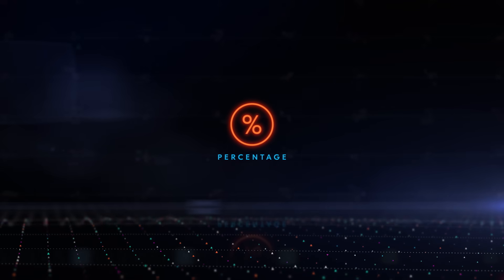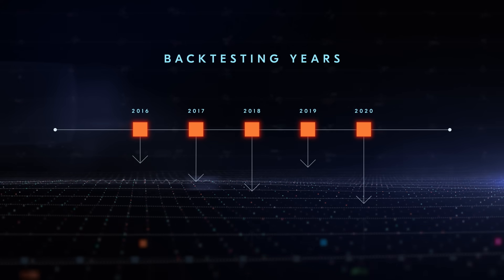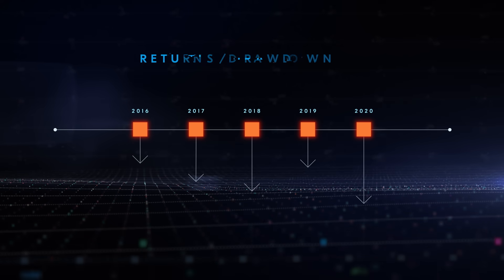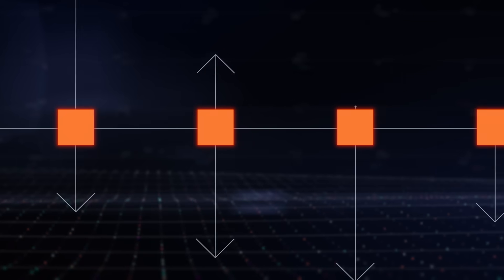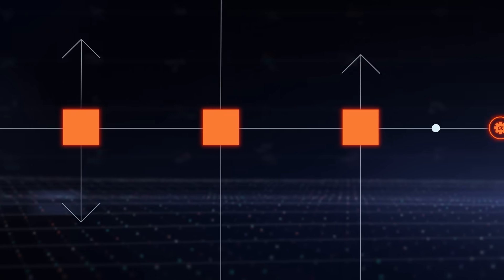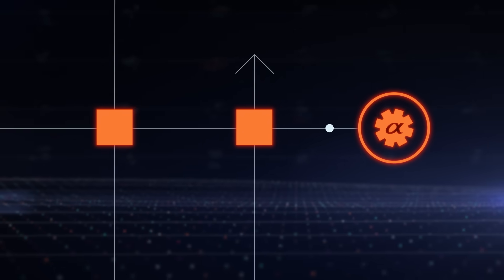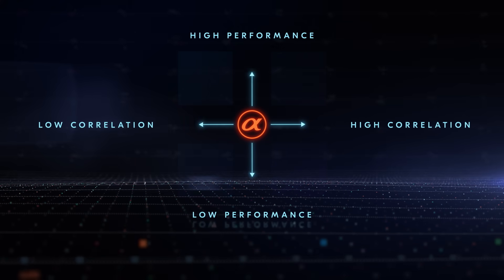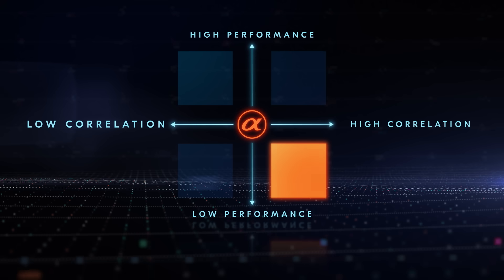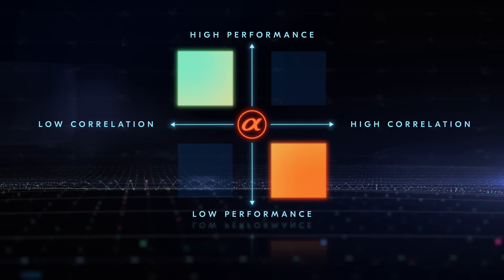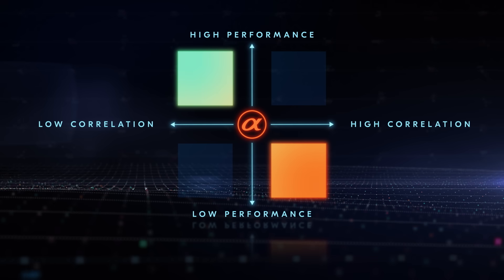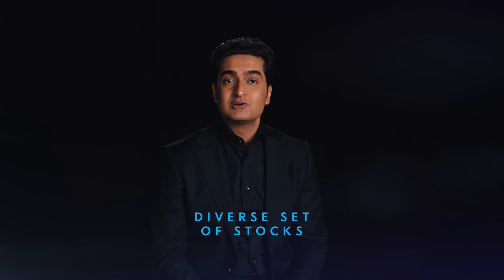Drawdown represents the percentage of the largest loss incurred during any year in your backtesting. As a practice, you should target a return to drawdown ratio greater than 1. The higher the ratio of returns to drawdown, the better it may be for your alpha. The correlation of the alpha to other alphas in the pool should be low unless we see much higher performance as compared to the correlated alphas. The metrics to check if the performance is contributed by a diverse set of stocks include a weight test and a sub-universe test.